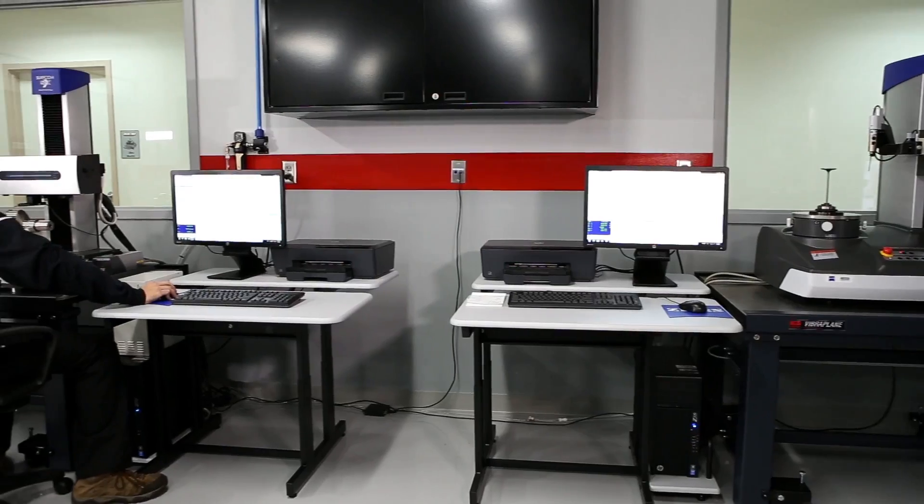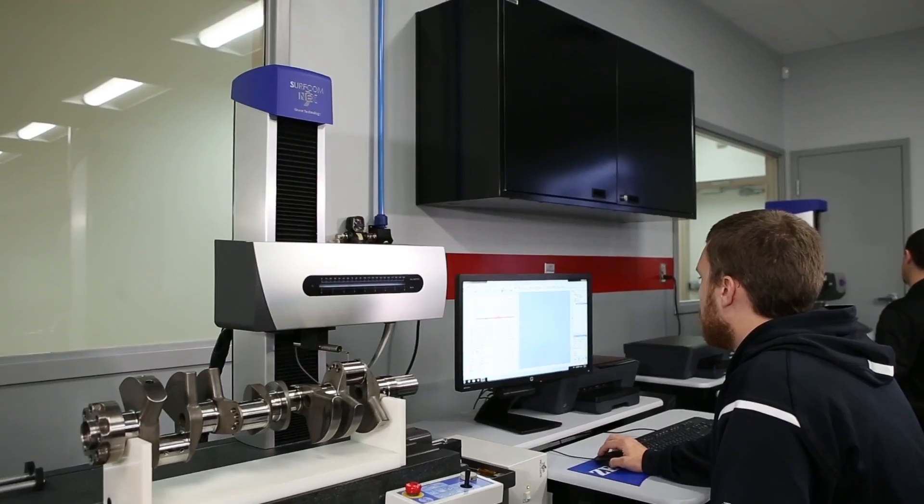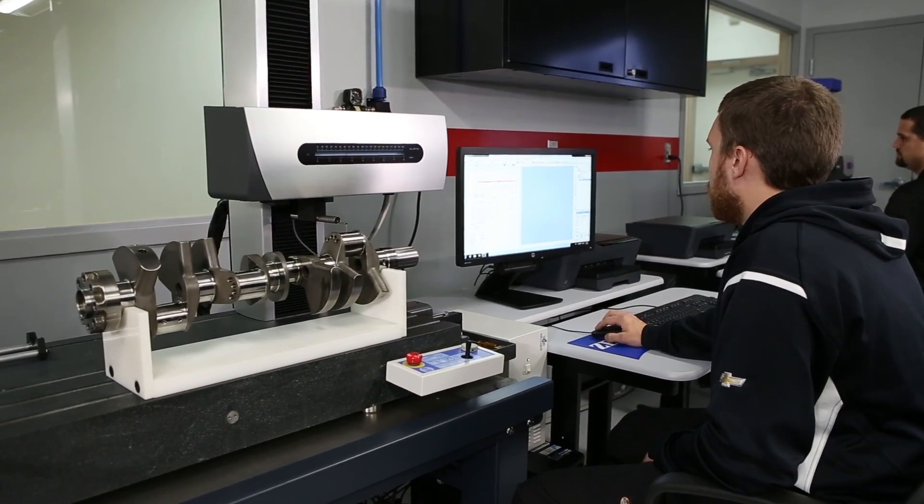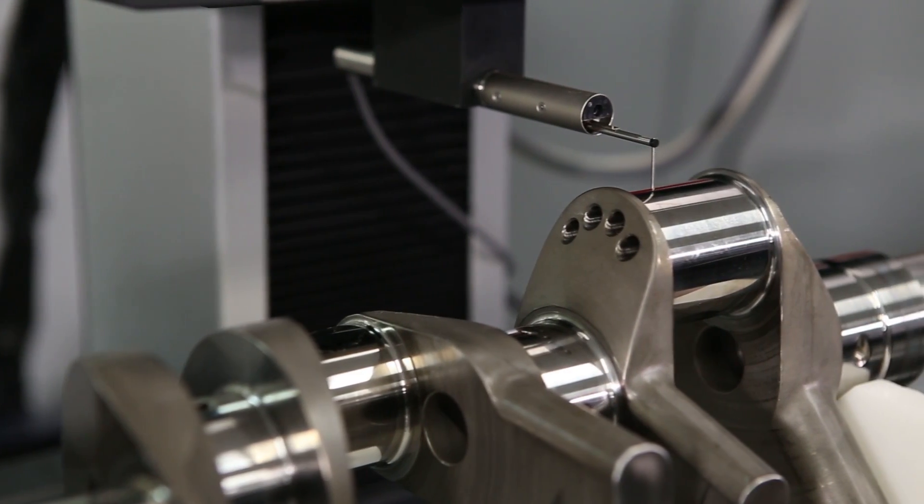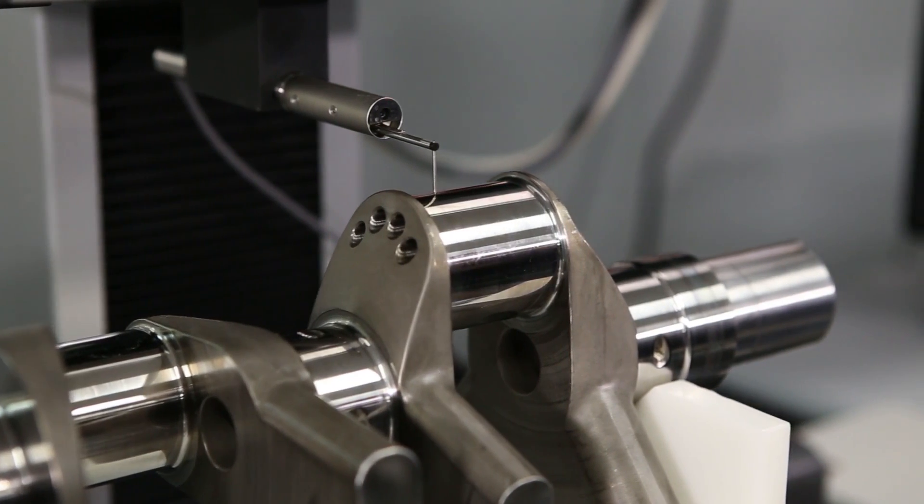We have our Surfcom Next that we're using to measure very fine finishes. A lot of our components are super finished, so we require a very accurate and precise instrument to measure those surfaces. We're also using the Surfcom Next for contour measurement and geometry of various components.